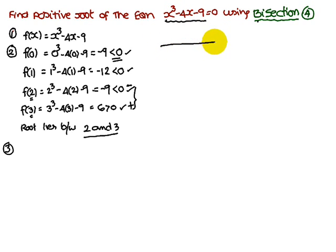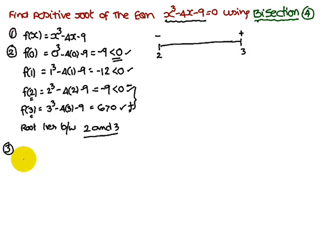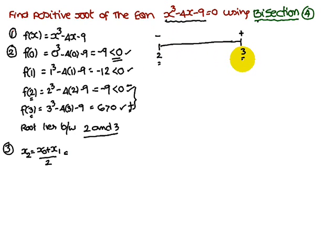Next, draw a real number line and represent 2 and 3. For 2 the sign is negative, for 3 the sign is positive. Using the bisection method formula: x₂ = (x₀ + x₁) / 2 = (2 + 3) / 2 = 5/2 = 2.5.